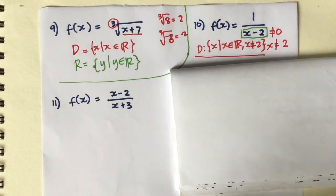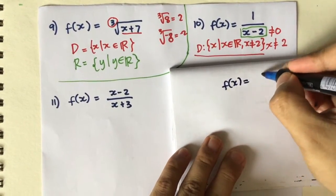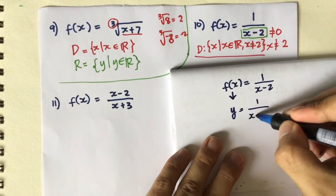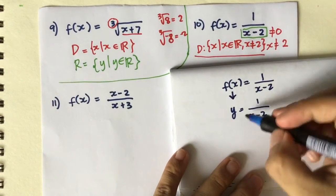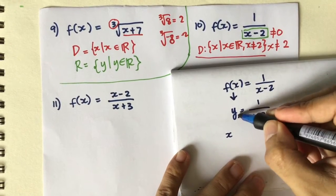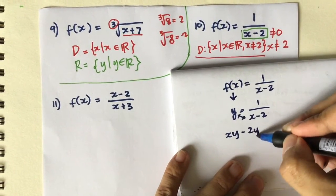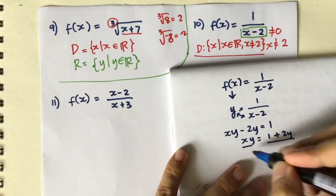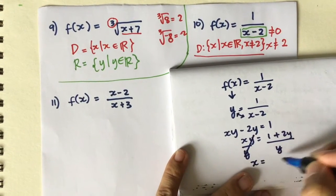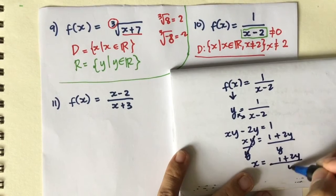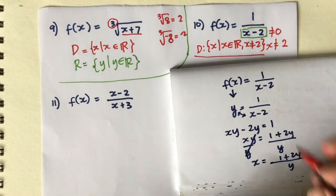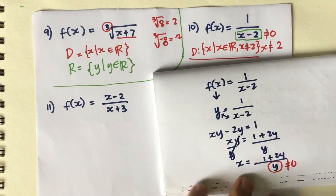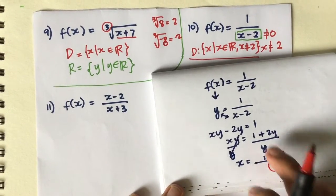To find the range, the easiest way is to solve for x in terms of y. Since f(x) equals y, we have y = 1/(x - 2). Multiplying both sides: xy - 2y = 1. Isolating x: xy = 1 + 2y, so x = (1 + 2y) / y. Notice y is in the denominator, so we are not allowed to have y = 0.